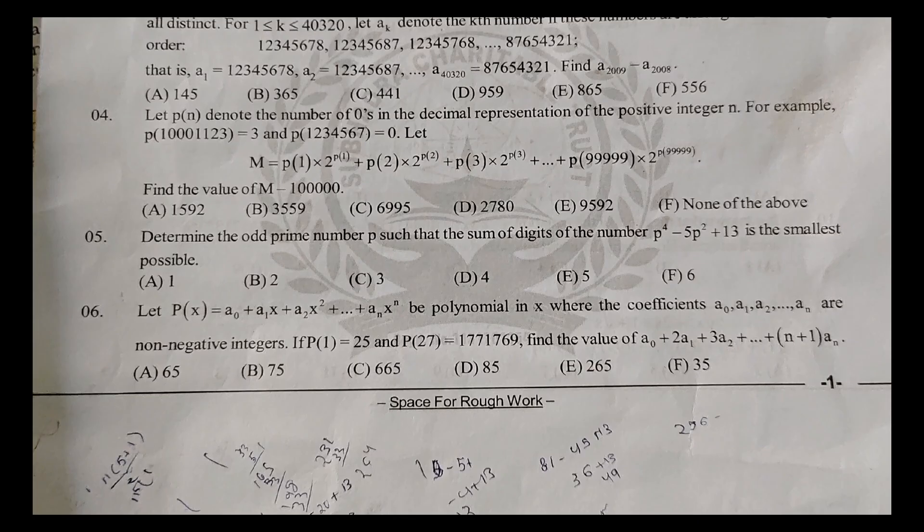Determine the odd prime number P such that the sum of digits of P^4 - 5P^2 + 13 is the smallest possible. The answer is E, 5.